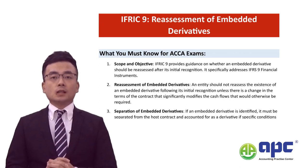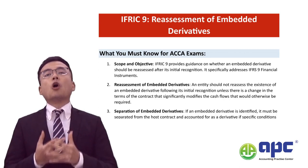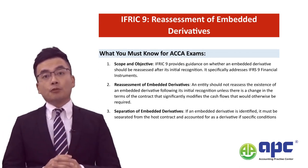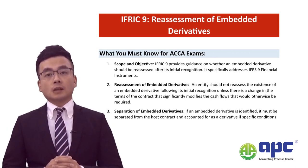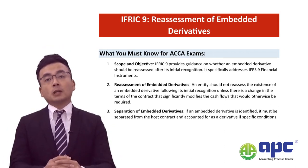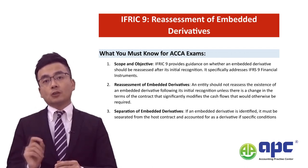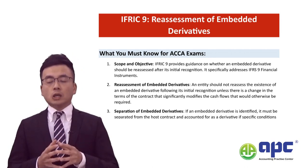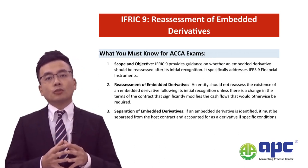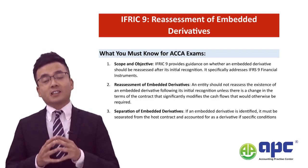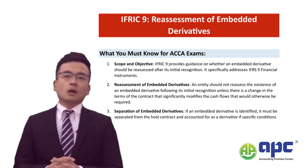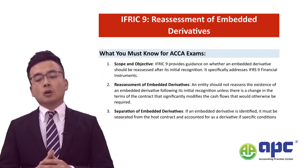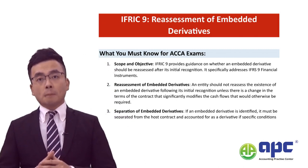Embedded derivatives are something on top of the host contract. A common example for this would be the Convertible Bond, because on top of the bond we've got the conversion feature, because it allows the holder to convert that bond into shares at some point in the future. In the financial market, you can see different types of embedded derivatives designed by the bank.